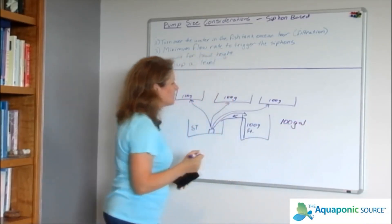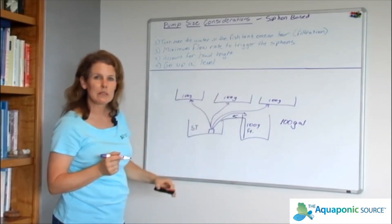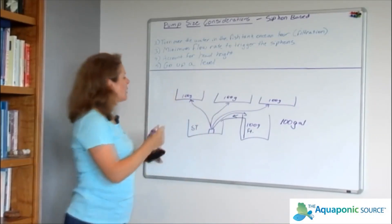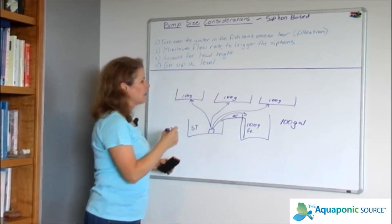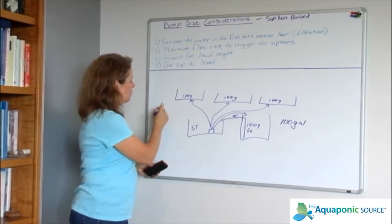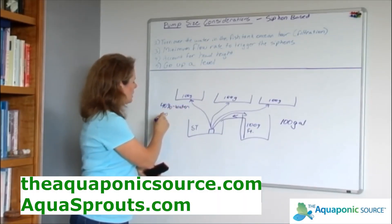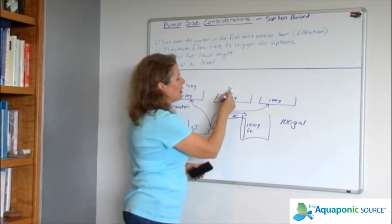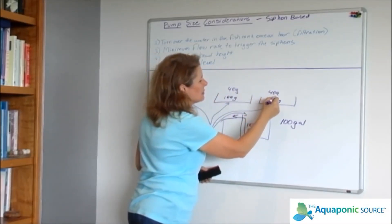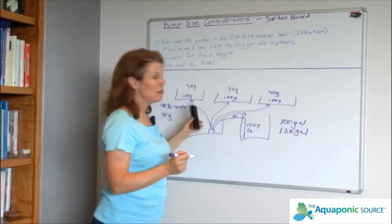At the same time the water is going in there, it's filling up each of these grow beds. So at a minimum I need to make sure that I'm getting enough water into each of these grow beds in order to fill them up. Now back to what we've been saying, we've got only 40% of the grow beds being filled with water, so 40 gallons. I've got to move 40 gallons of water into these grow beds all the time. So now I've got three times 40, 120 gallons, being accounted for by the grow beds.